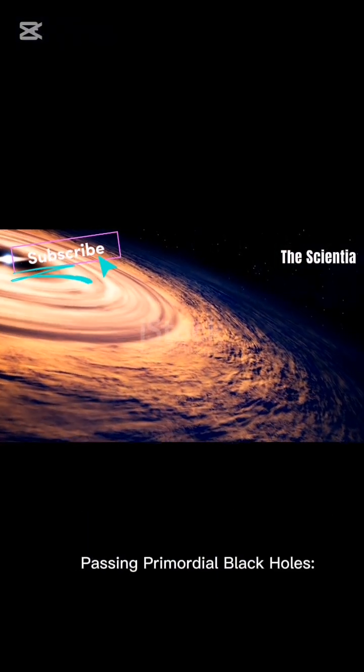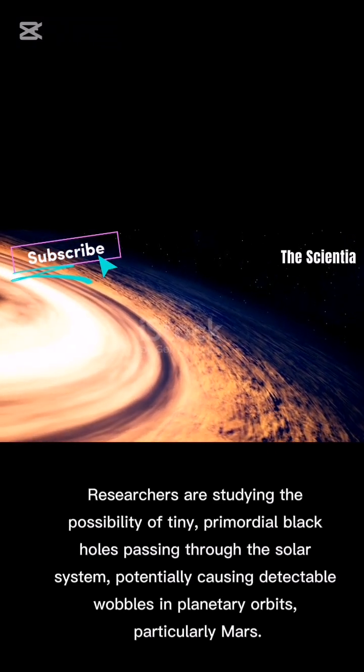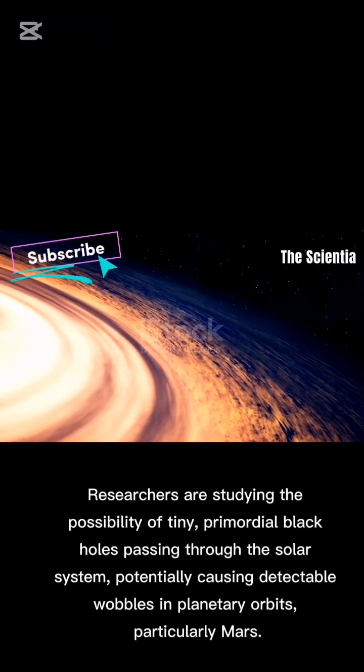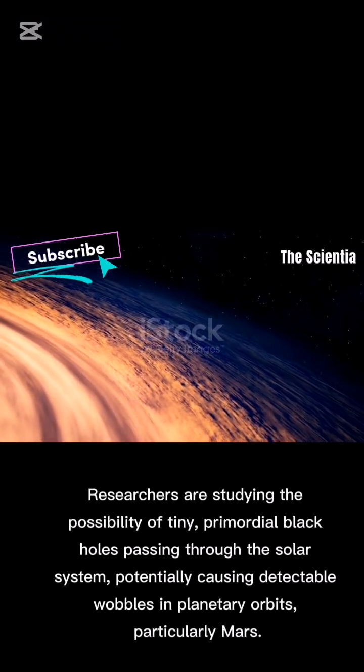Passing primordial black holes. Researchers are studying the possibility of tiny primordial black holes passing through the solar system, potentially causing detectable wobbles in planetary orbits, particularly Mars.